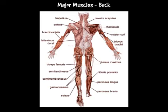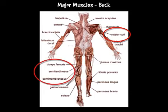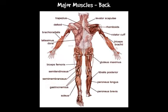Exactly the same process for the back — again pause this and make a note of the rotator cuff and what we call the hamstring area, which is where the biceps femoris, semitendinitis, and semimembranosus are on this picture.